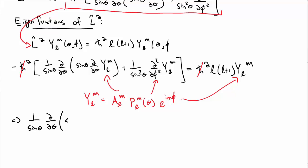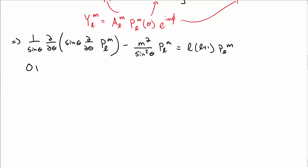The phi dependence will cancel after we take the phi derivative. So at the end of this calculation, I get the first term, which is just a derivative with respect to the P_lm, the theta dependence. The phi derivatives bring down minus m squared times P_lm. And on the right hand side, I still have L L plus 1 times P_lm. Okay.